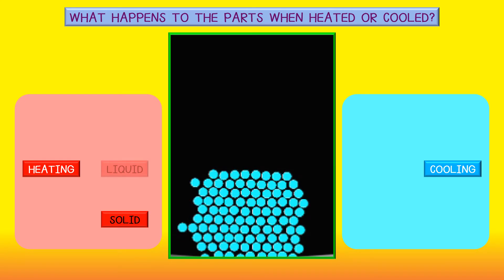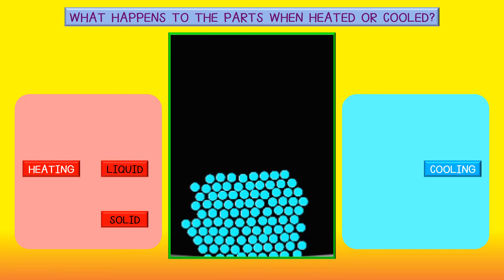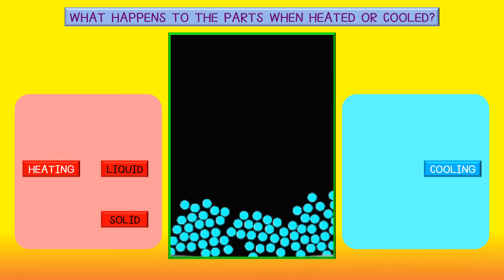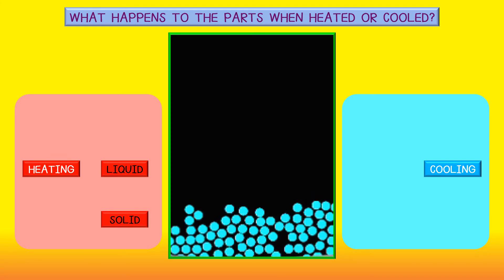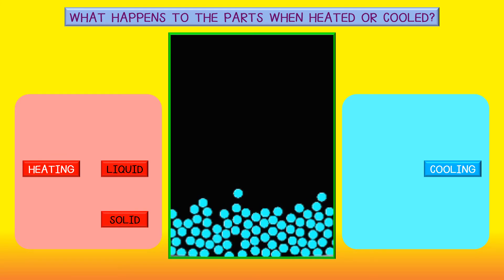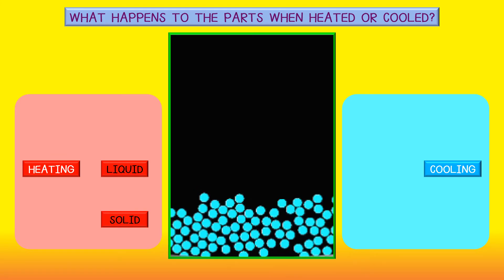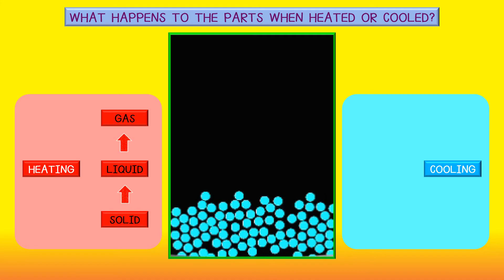In a liquid state of matter, the parts are further apart and move more quickly. In a gas state of matter, the parts are far from each other and move very quickly.